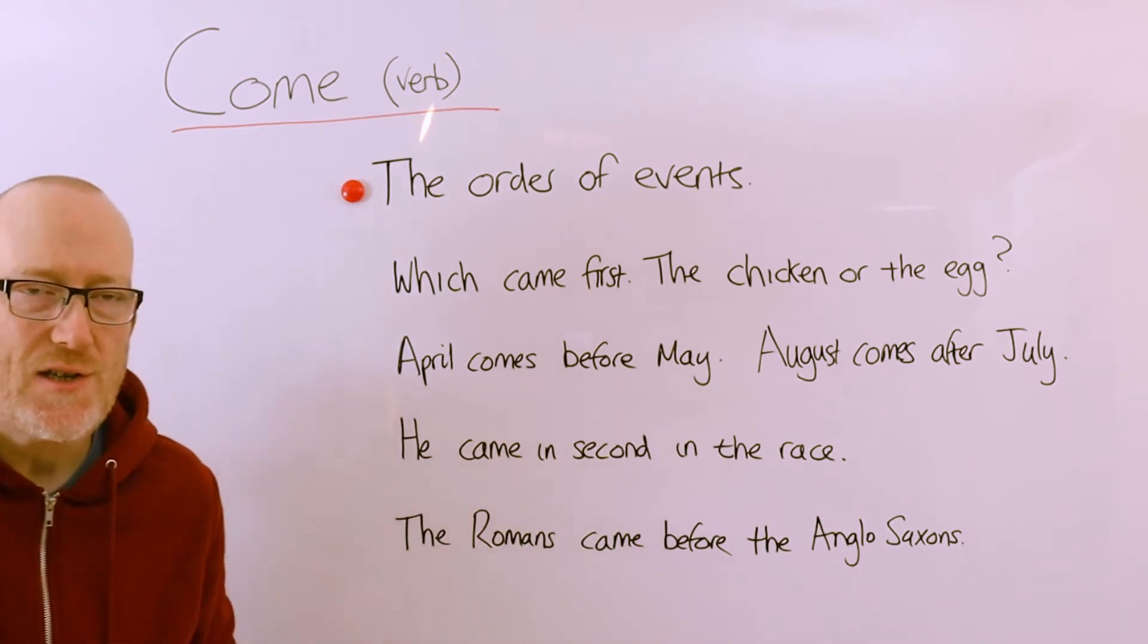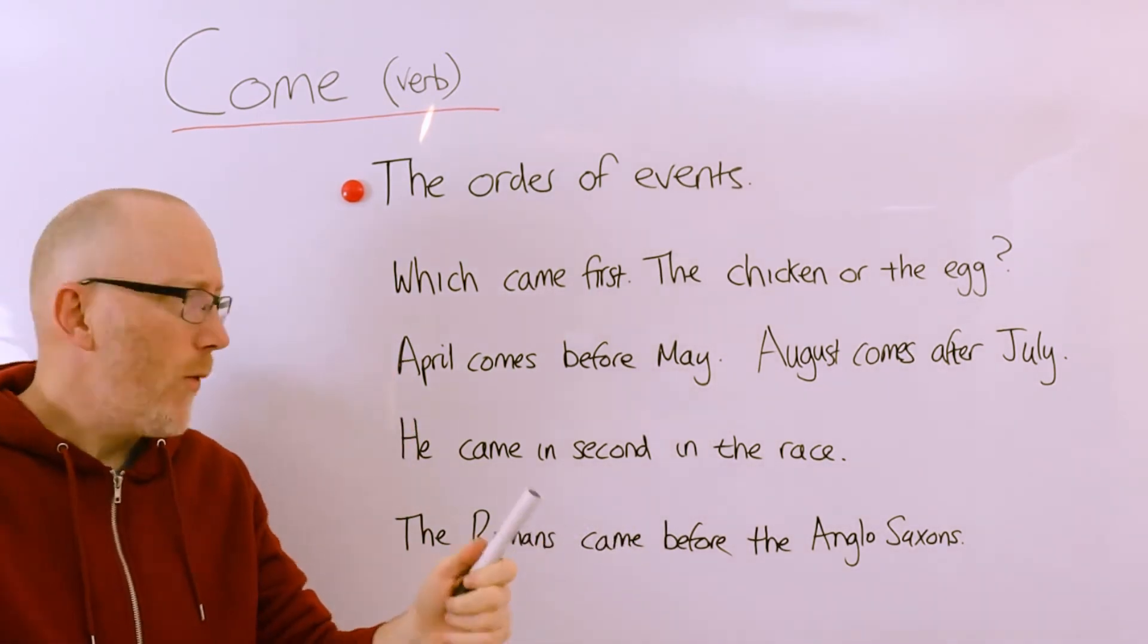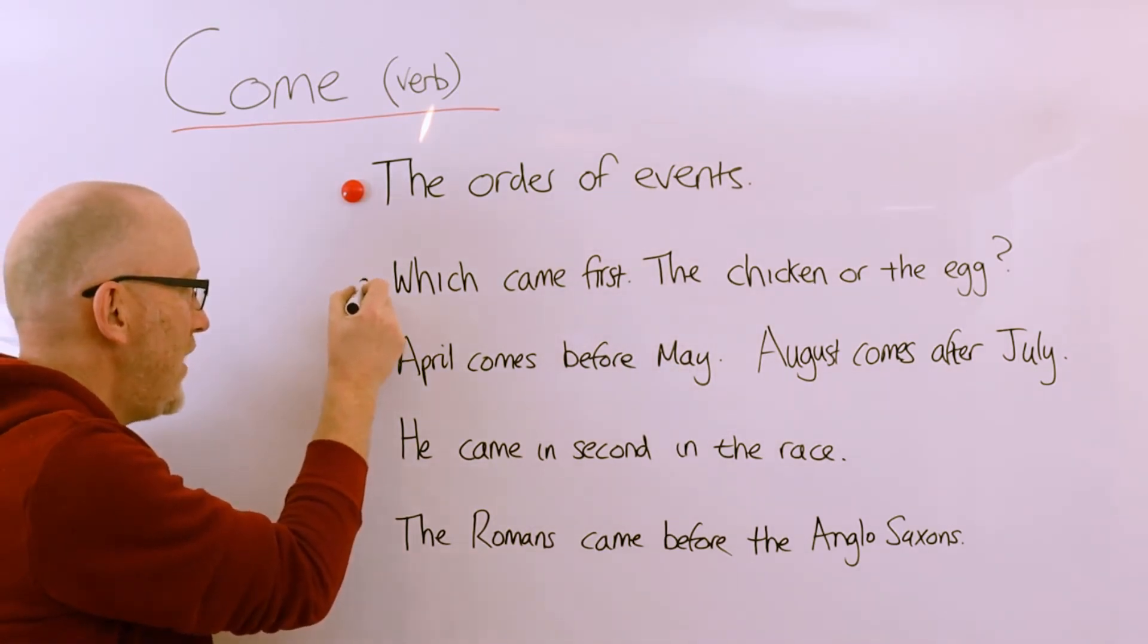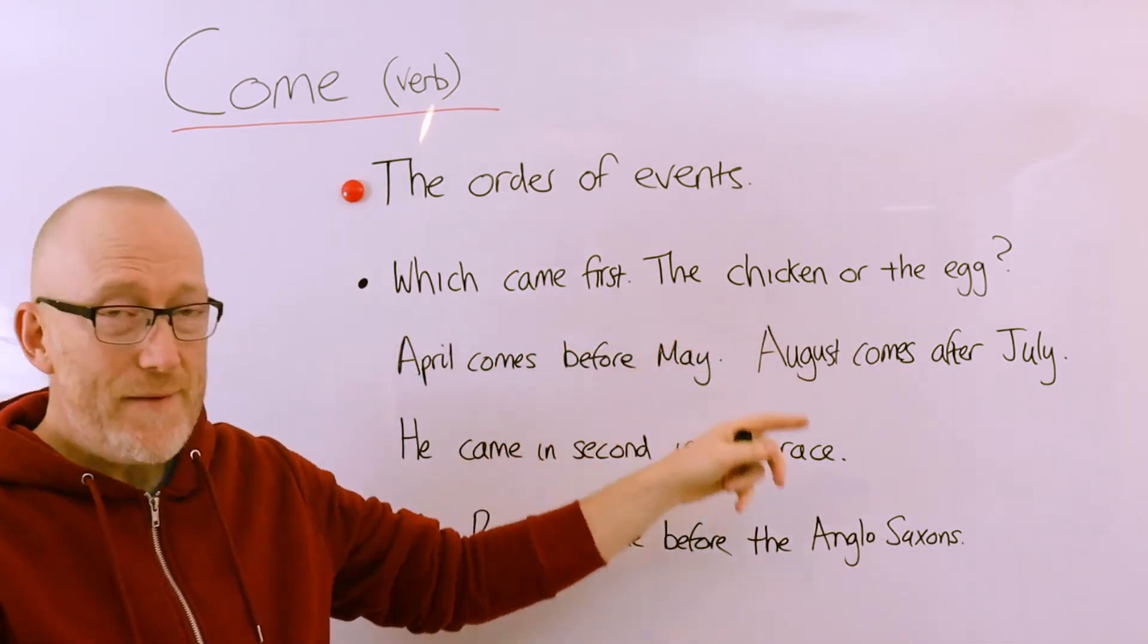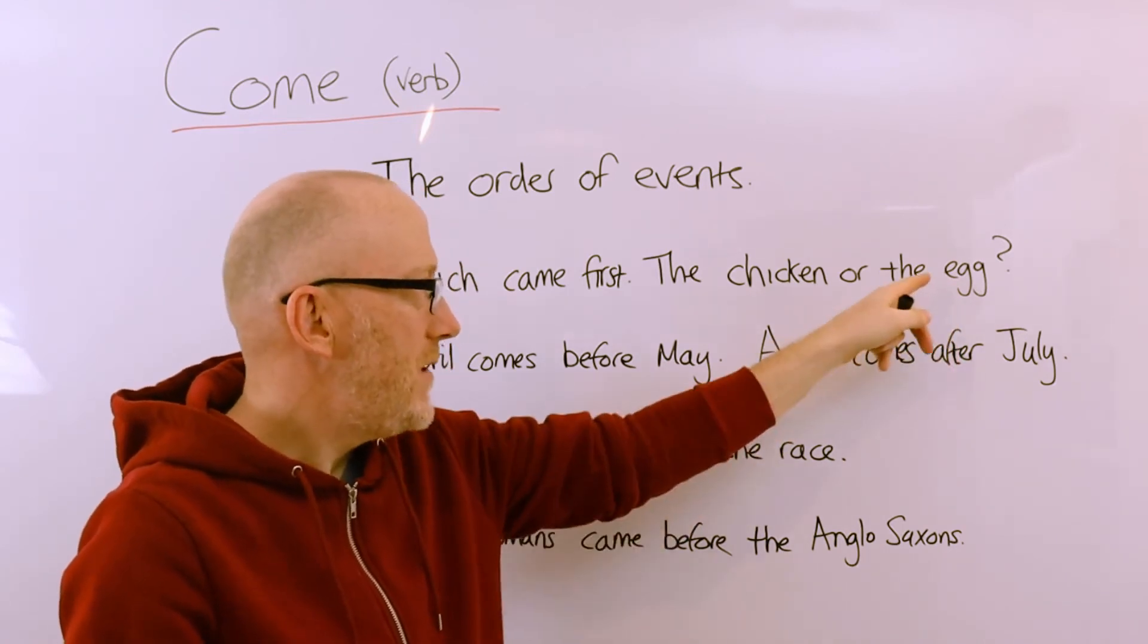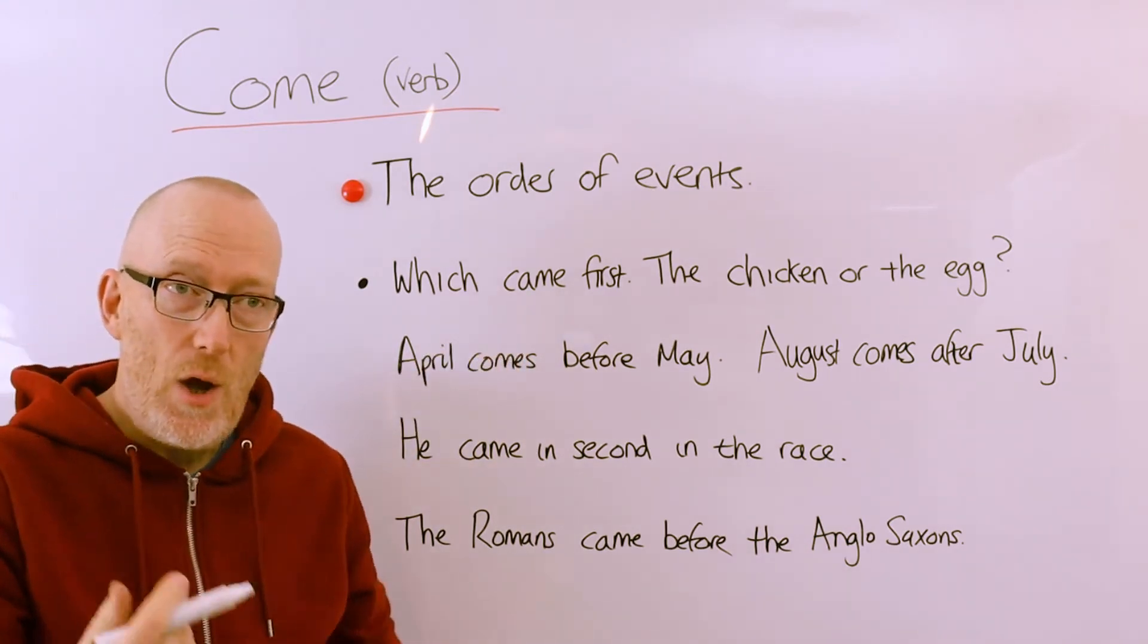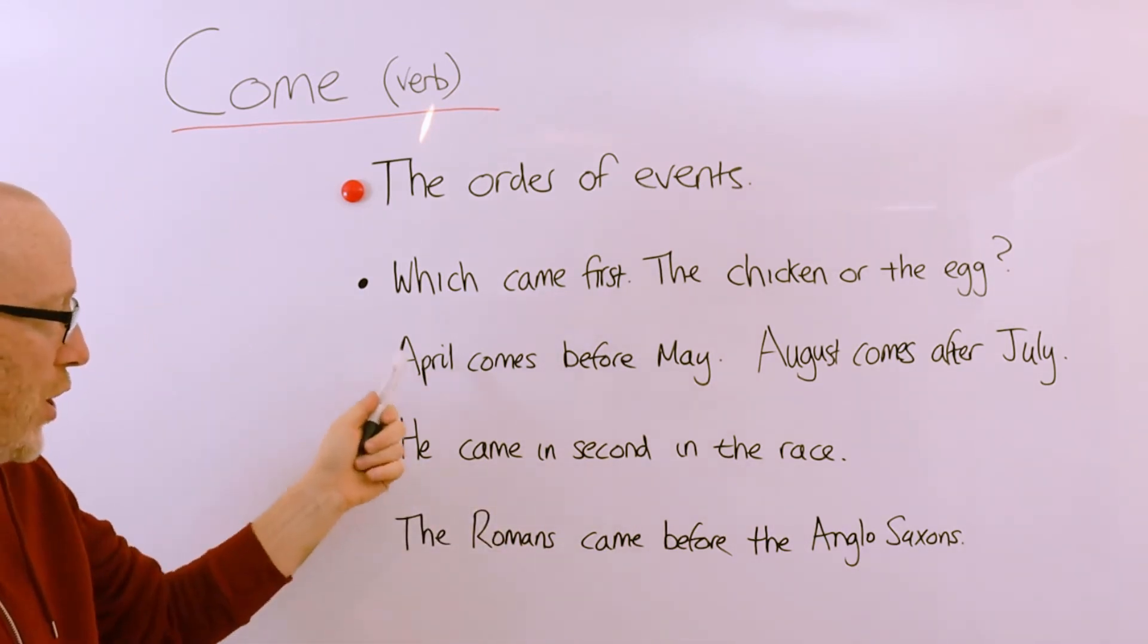Now another very interesting way that we use the verb come is to describe the order of events. So here's a very interesting question, which came first, the chicken or the egg? Which came first? This is a very famous sort of question, a quandary we might say. Which came first, the chicken or the egg? Well, it's a famous question, it's a quandary that no one really knows how to answer because chickens come from eggs, but to get an egg you need a chicken. So which came first, the chicken or the egg? We don't know, but we're using the verb come to ask about the order of events. April comes before May, which is true. January, February, March, April, May. April comes before May.